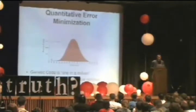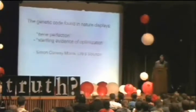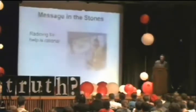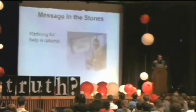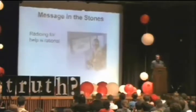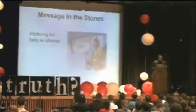The code found in nature is universal, meaning all lifeforms on Earth have essentially the same genetic code. As Simon Conway Morris says in his book Life's Solution, the genetic code found in nature displays eerie perfection and startling evidence of optimization. Going back to our story, it's not just that the pilot recognized information on the shore; it's that he saw a thatch hut with a fire burning — further evidence that a human being on that island needed help. Likewise, the optimization and fine-tuning in the structure of the code's rules provide further evidence for the work of a mind.